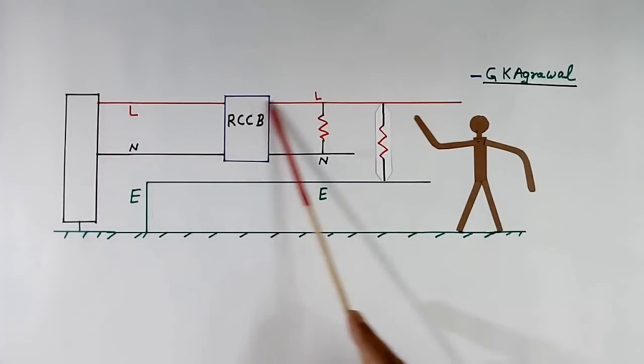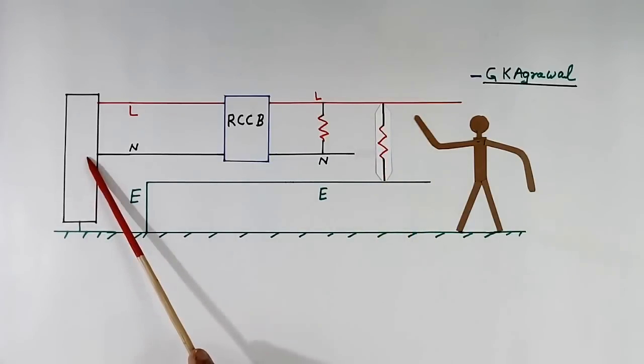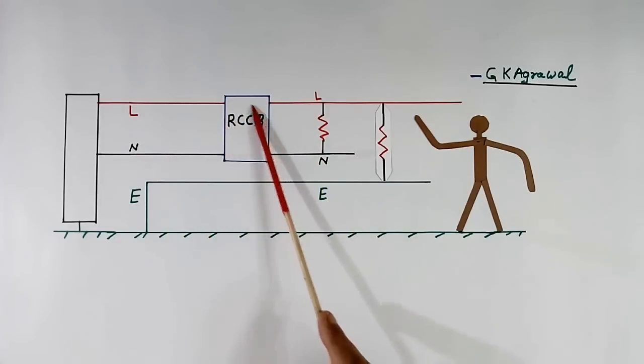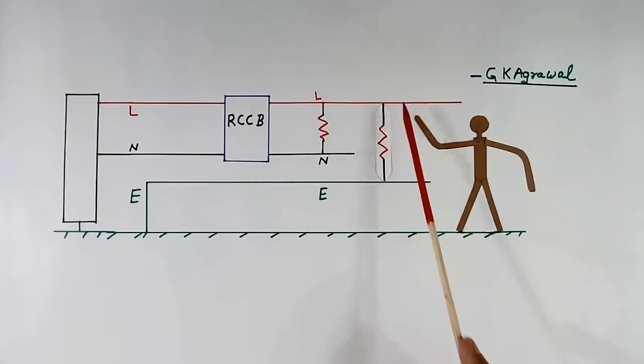Current what is going through line wire is coming back through earth wire. It is not coming back through neutral wire. So here current will flow. Here current will not flow. So this RCCB will trip, and we will not get any load.